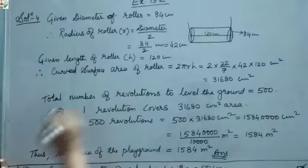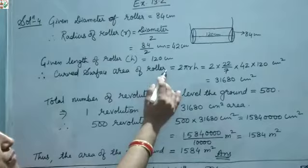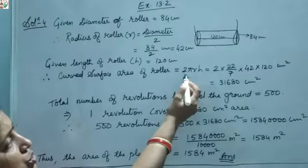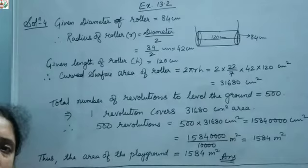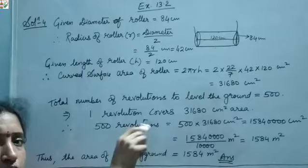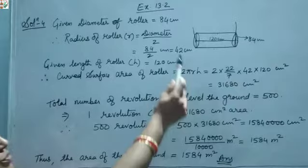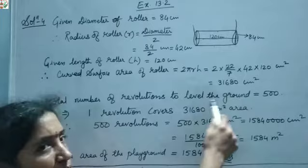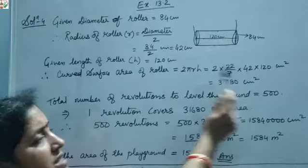Now the curved surface area of the roller for one complete revolution equals 2πrh. The curved surface area formula for a cylinder is 2πrh. Now put in the values: 2 into 22/7 into r = 42 and h = 120.